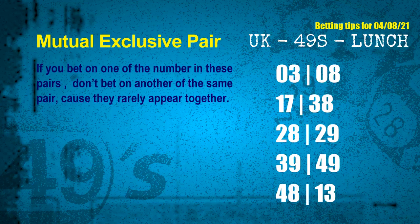Numbers in a mutual exclusive pair both match the following ones and colors, but according to thousands of results, they rarely appear together — which means if you bet on one of them, don't bet on the other in the same pair. The mutual exclusive pairs for the next draw are: first pair 03 and 08; second pair 17 and 38; third pair 28 and 29; fourth pair 39 and 49; fifth pair 48 and 13.